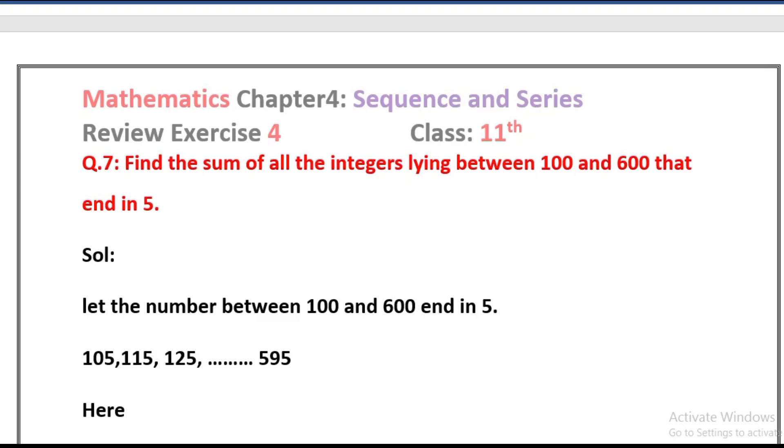So let the number between 100 and 600 end in 5. According to the condition, between means 105, then 115 as the second term ending in 5, third term 125, and so on up to 595.